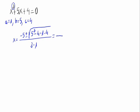From that we should have minus 5 plus or minus the square root of 5 squared which is 25 minus 4 times 1 times 4 which is 16, divided by 2 times 1 that is 2.